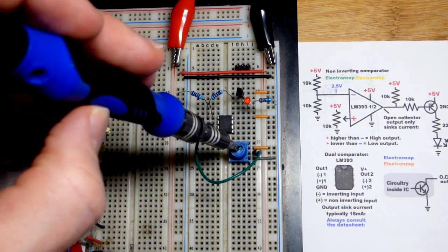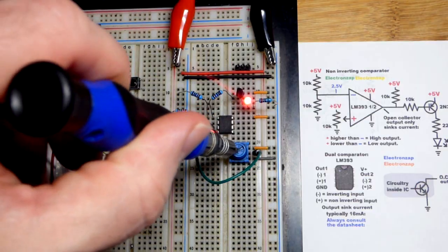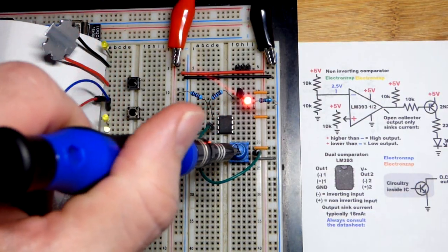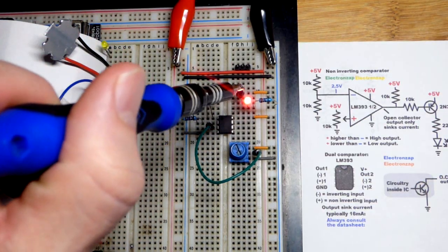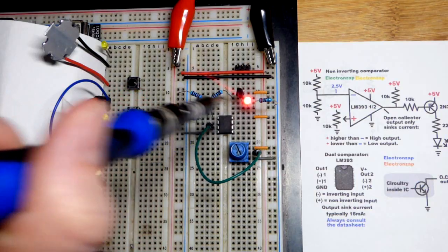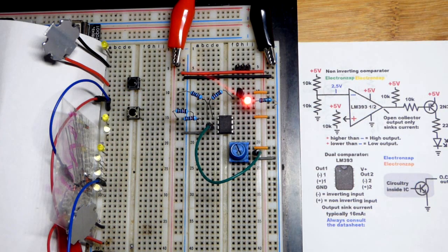We've got the reference voltage, half of the supply voltage, and then I turn the trimplot below halfway right there. We get a low output. That turns on the PNP bipolar junction transistor right there and turns the LED on.